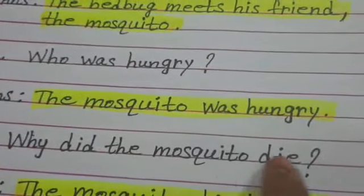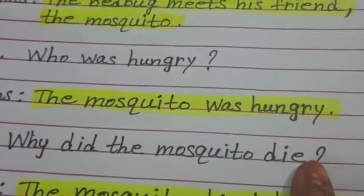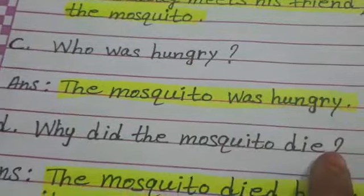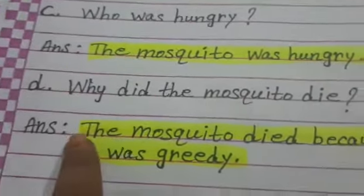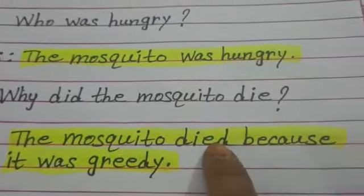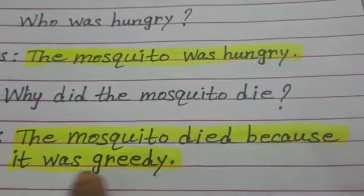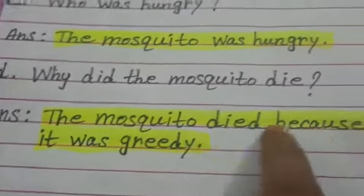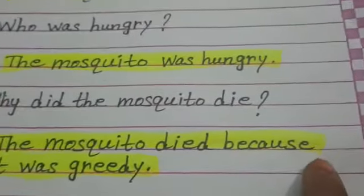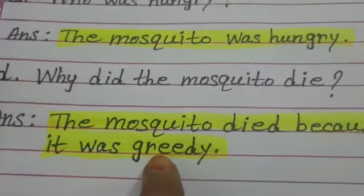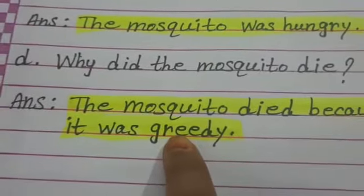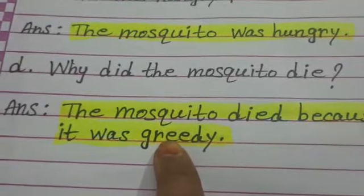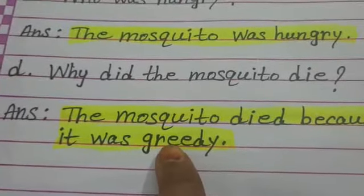1D: Why did the mosquito die? — meaning why did the mosquito die? Answer: The mosquito died because it was greedy — meaning the mosquito died because it was very greedy.